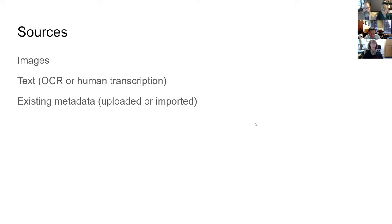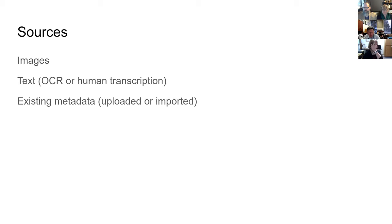Let's talk about the sources you need to use to create useful metadata. You can create metadata based on looking at images — that's what we originally designed this feature for. Partway through, we realized that projects that had already transcribed some material might want users to be able to read the transcribed text. After talking with Meredith during development, we realized there's a third potential source: old metadata. You might want to look at existing metadata for items and use that to create new metadata about those items.